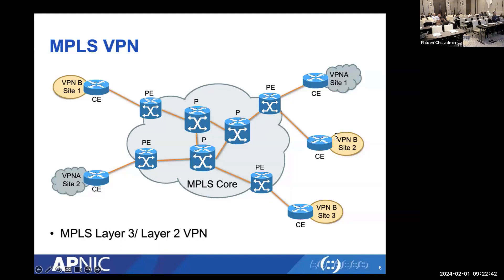For MPLS Layer 3 VPN, also known as IP VPN, the service provider participates in customer routing. The customer runs a dynamic routing protocol with the provider PE to advertise routes from their CE. The provider propagates those routes to other PEs at other VPN sites, which then re-advertise to the relevant CEs, giving the customer end-to-end reachability between VPN sites through the provider MPLS core.